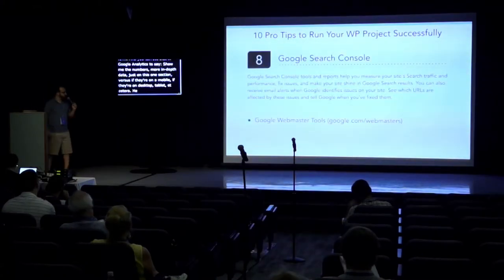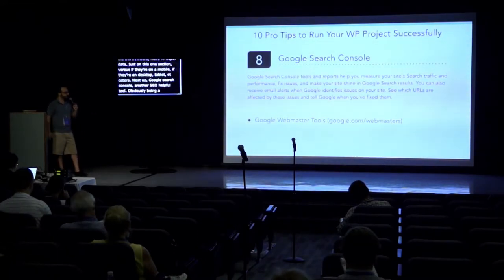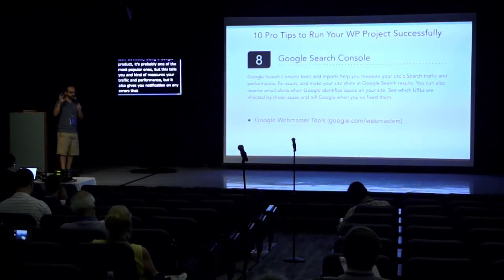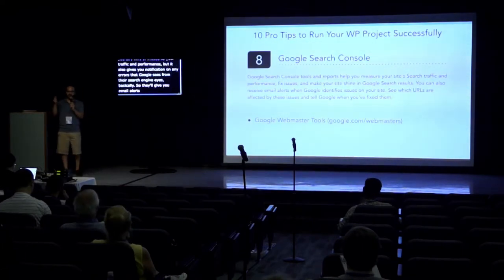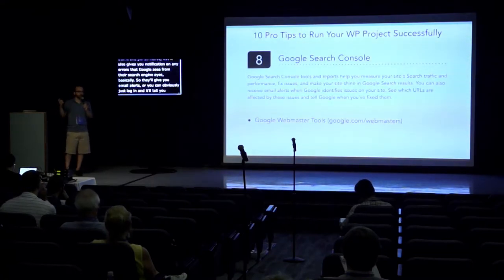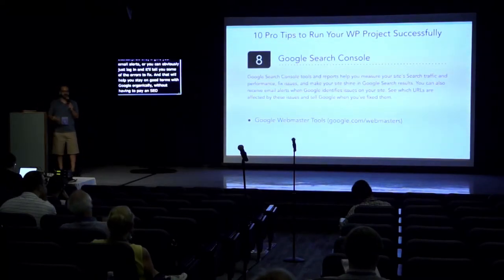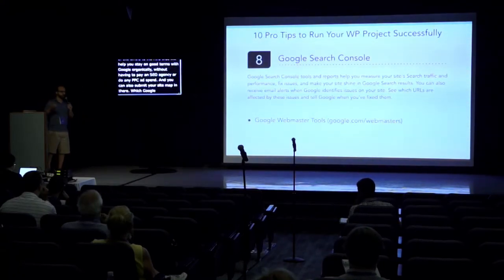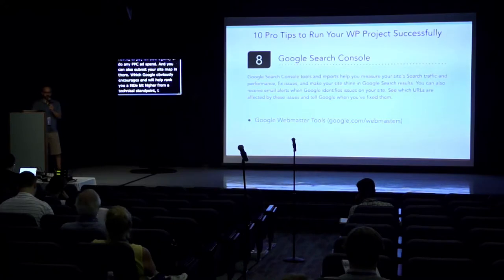Next up: Google Search Console, another helpful SEO tool. Being a Google product, it's probably one of the most popular ones. It measures your traffic and performance, but it also gives you notifications on any errors that Google sees from their search engine perspective. They'll send email alerts or you can log in to find errors to fix, which will help you stay on good terms with Google organically without paying an SEO agency or doing PPC ad spend. You can also submit your sitemap there, which Google encourages and will help rank you higher by knowing where your pages are and how many you have.